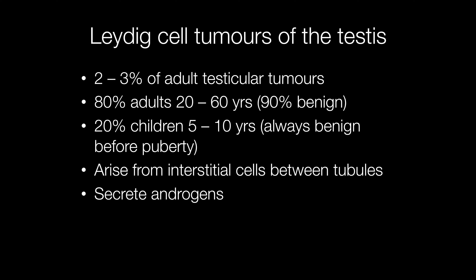Leydig cell tumours account for approximately two to three percent of adult testicular tumours. The majority of them occur between the ages of 20 and 60, which accounts for about 80 percent of Leydig cell tumours, and 20 percent occur in children between the ages of 5 to 10. Prognostically, age is important because Leydig cell tumours are always benign below the age of puberty, but in adults approximately 10 percent are malignant.